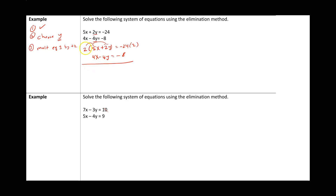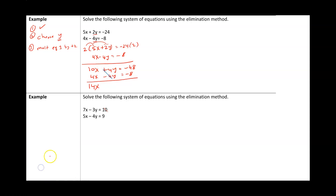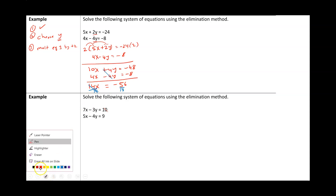So the new equations are: 2 times 5 is 10x, 2 times 2 is 4y, and negative 24 times 2 is negative 48. Then we have 4x minus 4y equals negative 8. Now we have positive 4y and negative 4y as additive inverses, so we can add down: 10 plus 4 gives 14x, the 4y and negative 4y cancel out, and negative 48 minus 8 is negative 56. Dividing both sides by 14 gives x equals negative 4.